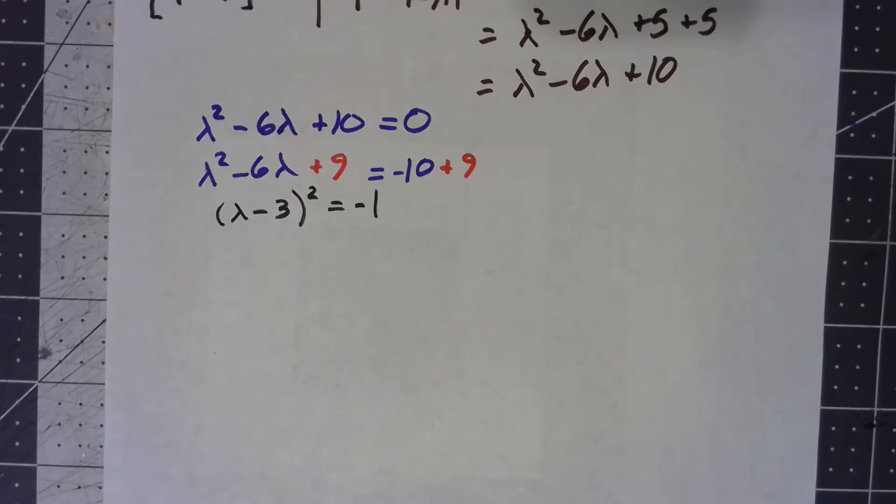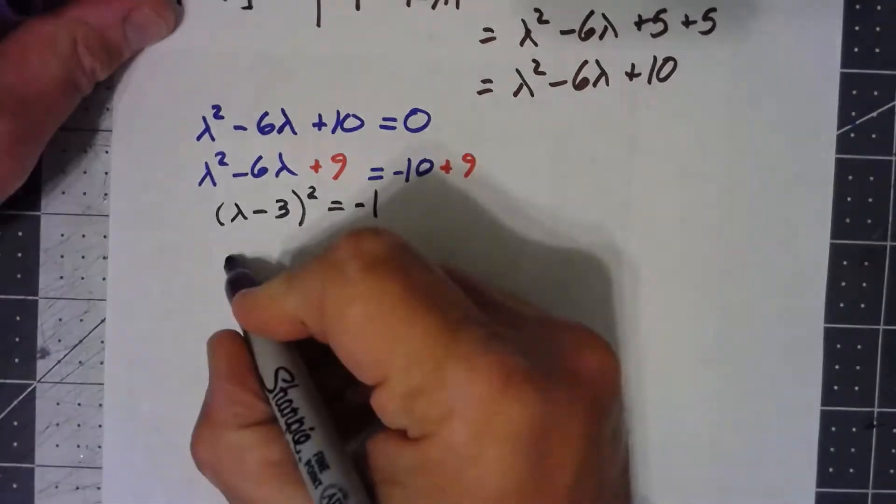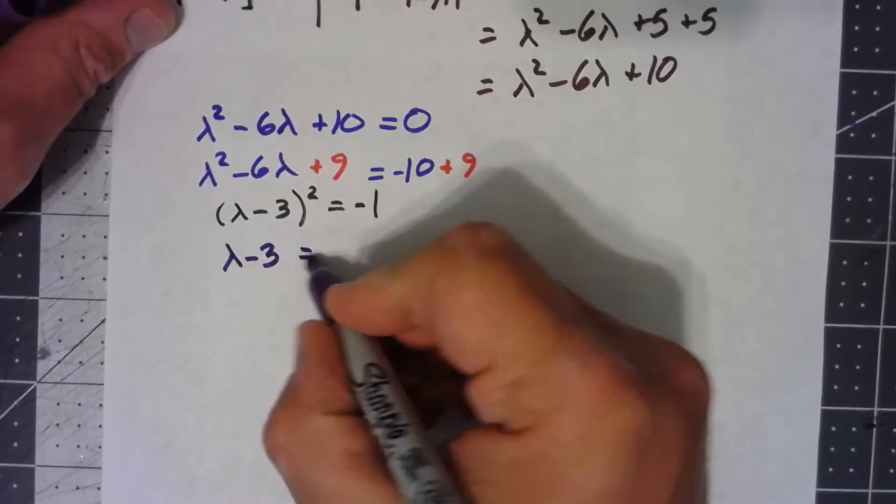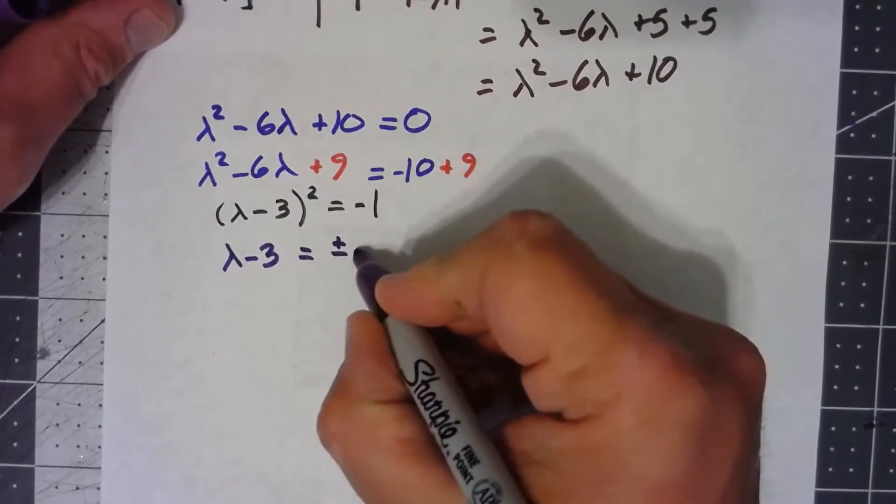But if we allow complex numbers, there's certainly solutions to that. Take the square root of both sides. So I get lambda minus 3 is plus or minus i.